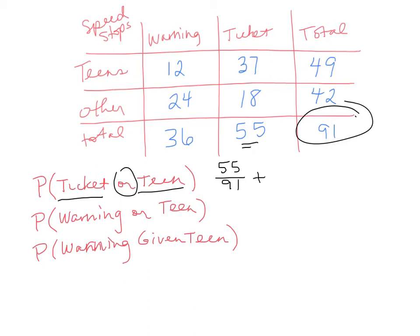I add that to the probability of randomly selecting a teen, all the teens, 49 of them. But I have to subtract anybody in both categories. So I want to subtract the teens who got tickets. That's these 37 people right here. Those 37 people were in this. When I wrote down 55, it included them. It also included them when I wrote down 49. So I have to subtract them.